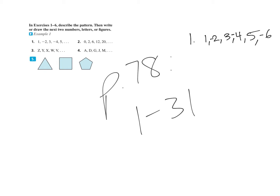You're supposed to give the next two numbers, letters, or figures. So there's negative six, then positive seven. On number three, it's the alphabet backwards: Z, Y, X, W, V — and you can figure out what comes after that.